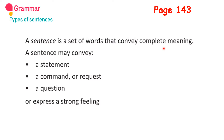A sentence should give you proper, sensible meaning — there should not be any break. There are four types of sentences: a statement, a command or request, a question, and expressing a strong feeling. A statement is nothing but a declarative sentence. A command or request is nothing but an imperative sentence. A question is nothing but an interrogative sentence. Expressing strong feeling is nothing but an exclamatory sentence.